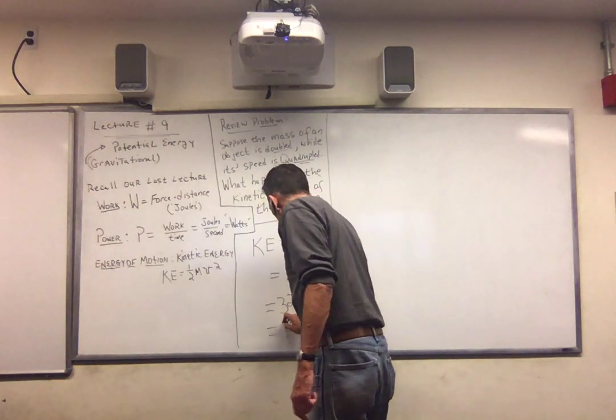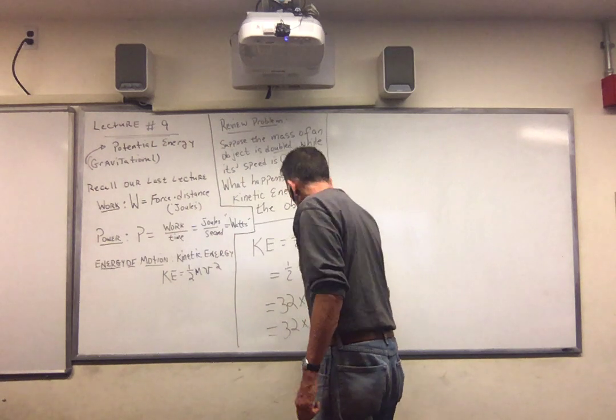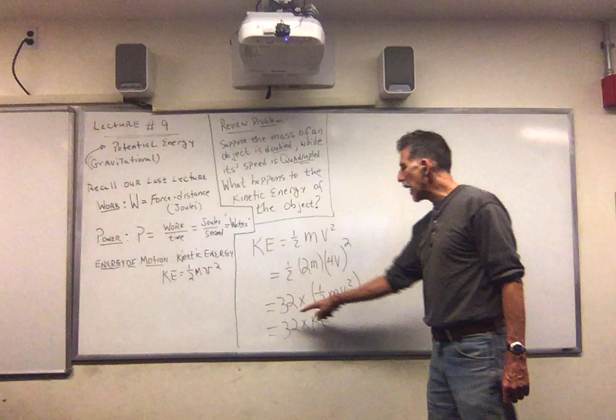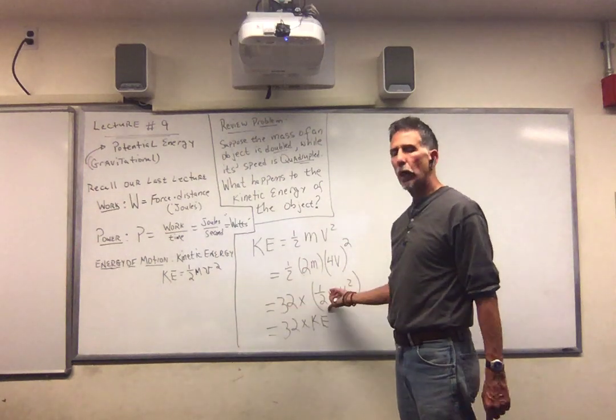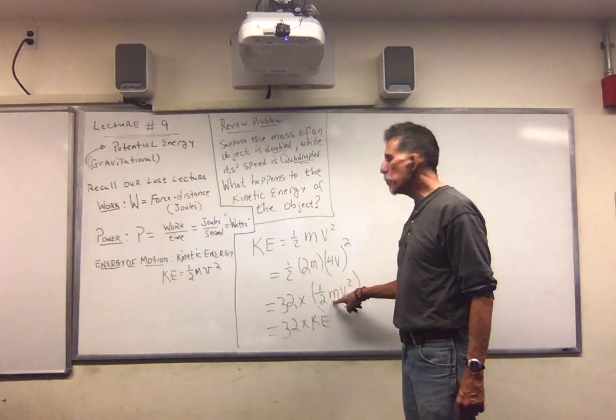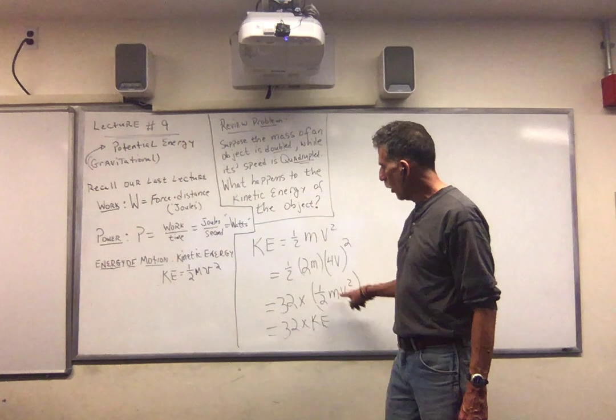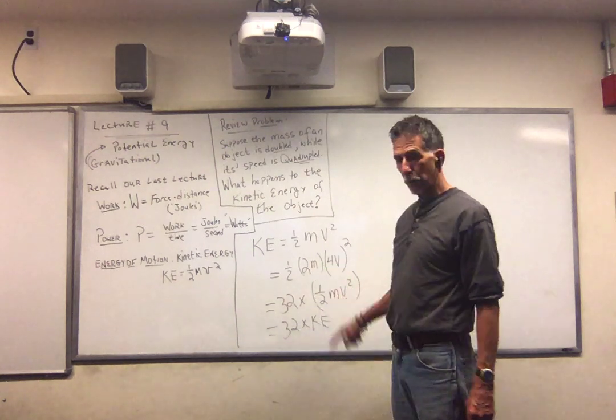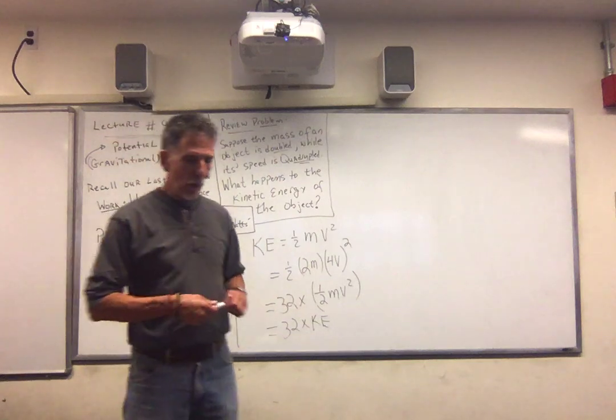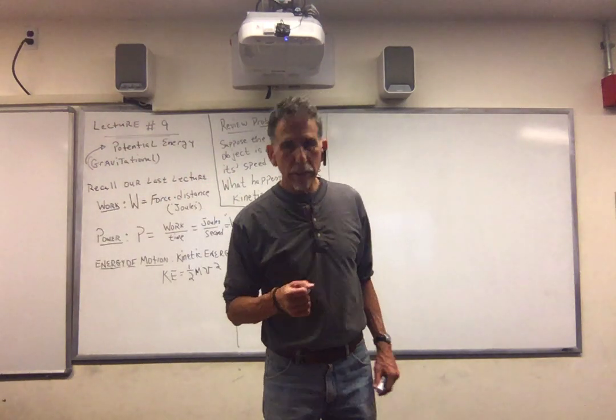So this is 32 times the kinetic energy. So the kinetic energy is increased by 32 times. Do not multiply 32 times a half. You will get 16. 16 what? 16 mv squared. mv squared is not kinetic energy. 1 half mv squared is kinetic energy. So be very careful. Okay, so let's talk about gravitational potential energy and see what we do with this.